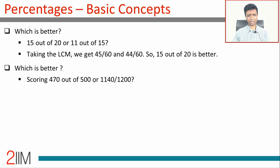Build on this—suppose we're comparing slightly larger numbers. Which is better: scoring 470 out of 500 or 1140 out of 1200? If you have larger numbers or a set of many numbers, converting all of them to the LCM of five or six denominators becomes tricky and time consuming. So what can we do here?